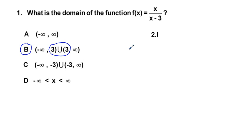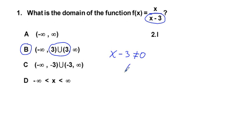Analytically, since the denominator cannot equal zero, we set x − 3 ≠ 0 and solve by adding 3 to both sides: x cannot equal 3. That gives us the exclusion, confirming B is the correct answer.